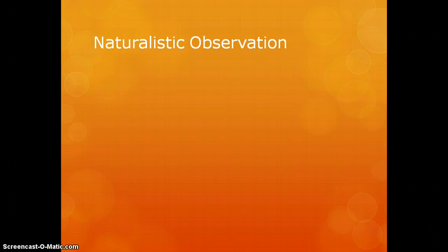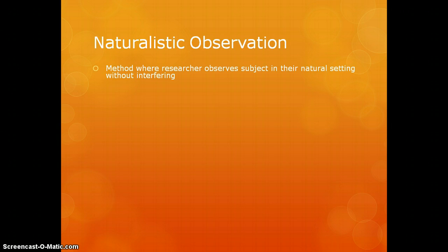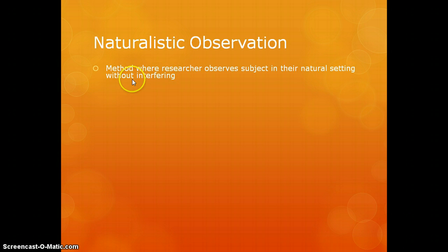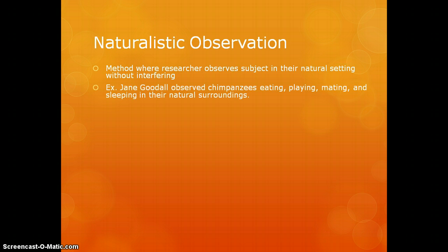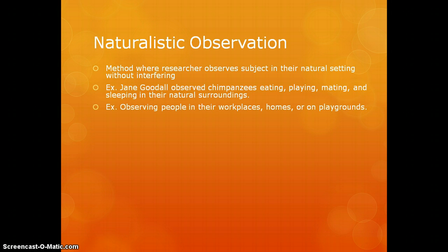The first method we're going to talk about today is naturalistic observation. Underline, circle, or highlight that word 'natural' — it's going to be really important. Naturalistic observation is a method where researchers observe a subject in their natural setting without interfering. An example of how this is used with animals is Jane Goodall, who used naturalistic observation while studying chimps eating, playing, mating, and sleeping in their natural surroundings.